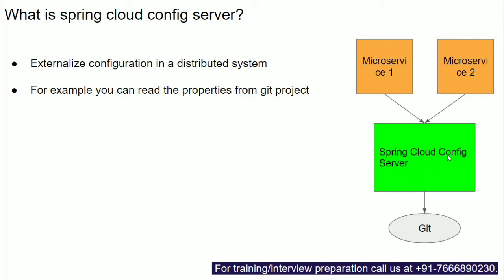Spring Cloud Config Server acts as an entity that externalizes your configuration. This helps microservices scale independently, and allows you to change configuration at runtime while the microservices are running. Spring Cloud Config Server helps externalize configuration in a distributed system.